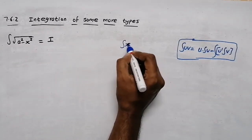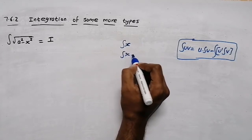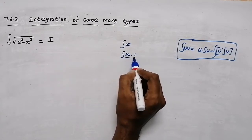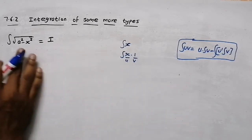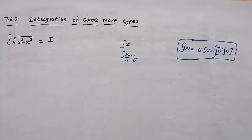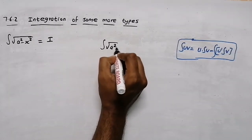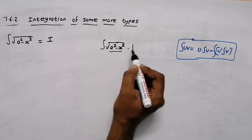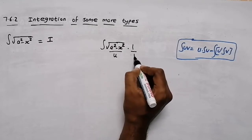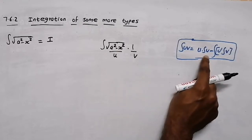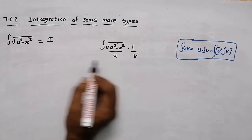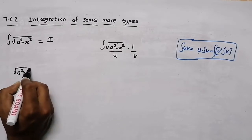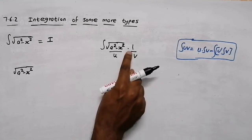We are going to apply this. This is the root of u1 and this is v1. We will make this function: the root of a² minus x² into 1. So we will take u equal to root of a² minus x², and integral of v equals v1. u is the root of a² minus x² multiplied by integral v.